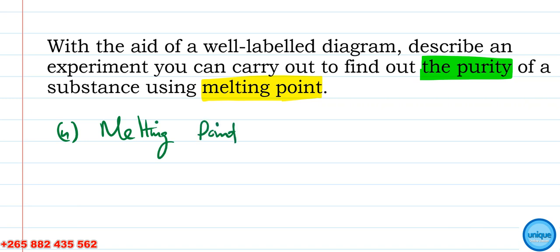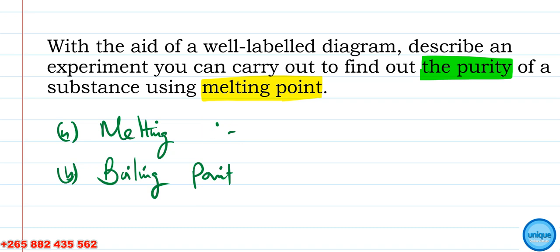The other method is using a boiling point. These are the easiest ways we can use to determine the purity of a substance. Keep in mind that boiling point and melting point are physical properties of a pure substance.